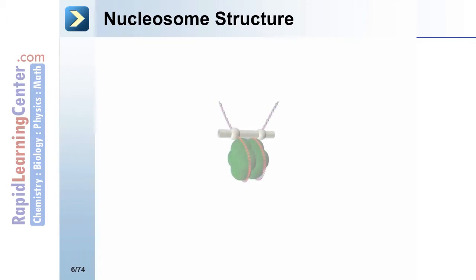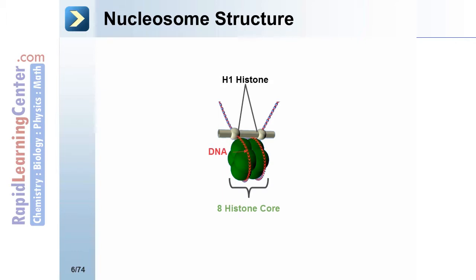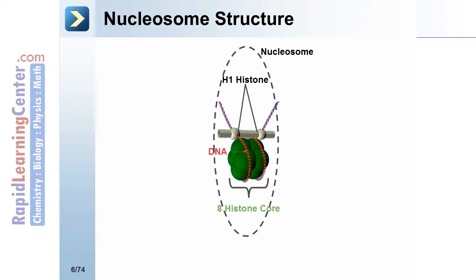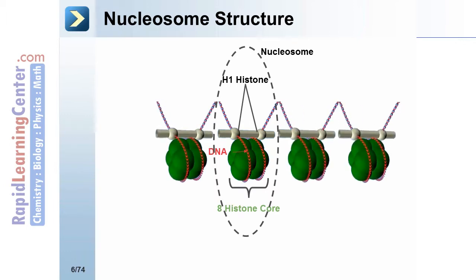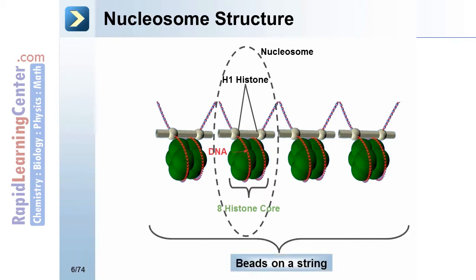Nucleosome structure: here we see the histones with DNA wrapped around them. The 8-histone core is at the center, with the DNA strand around it. The H1 histone is the linker portion. This entirety is known as the nucleosome, and these nucleosomes together form the beads-on-a-string structure.